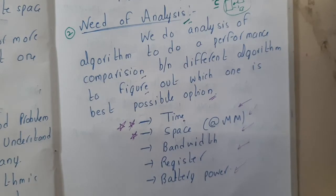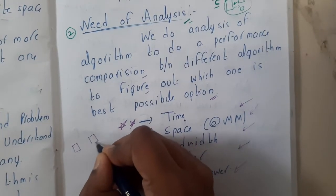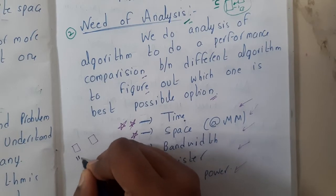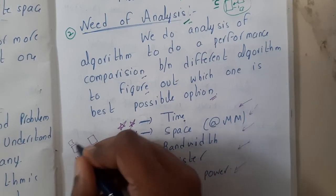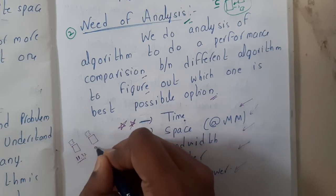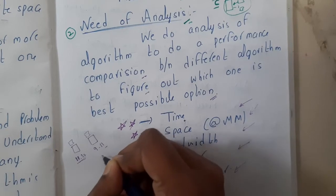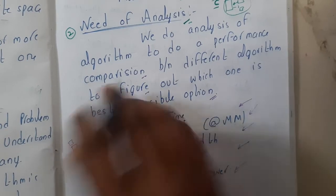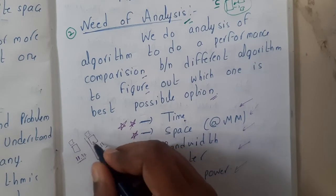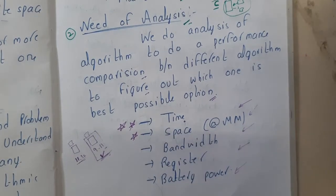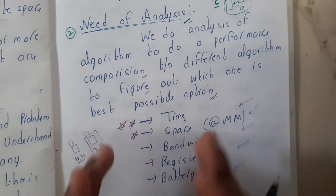With respect to time: assume that you wrote a code and your friend also wrote a code. Your code is taking 11 seconds 32 milliseconds with a certain input, and with the same input your friend's code is taking 9 seconds 11 milliseconds. So which is better? Your friend's is better. In that way you can decide with the help of analysis. This is called time analysis - you are checking the exact execution time.